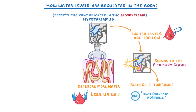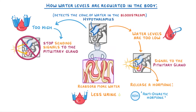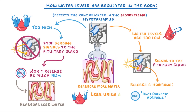However, if this process goes too far, or we drink too much water, and the level of water in the bloodstream gets too high, then the hypothalamus will stop sending signals to the pituitary, and so it won't release as much ADH. Because of this, less ADH will travel to the kidneys, and so the tubules will reabsorb less water into the blood. This means that more water will stay in the tubules, and so the kidneys will produce more urine to get rid of that extra water.